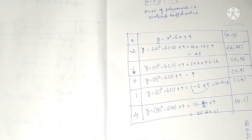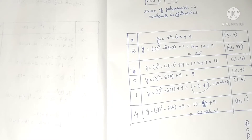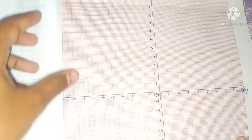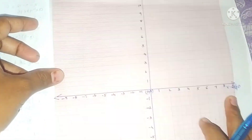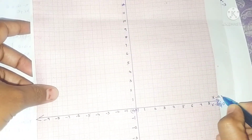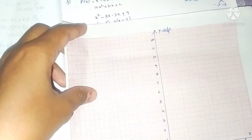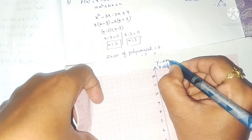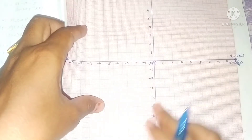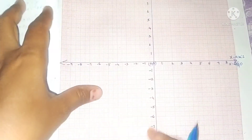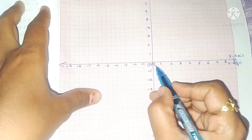Now we have 5 values, so let's draw the graph. As explained in the previous video, we draw a horizontal x-axis and a vertical y-axis. The intersection of the x-axis and y-axis is called the origin, (0, 0).